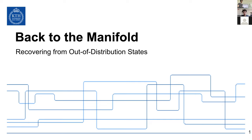My name is Alfredo Reichlin, I'm a second year PhD student at the Royal Institute of Technology, KTH, in Sweden. I'm supervised by Professor Danika Kragic and I mainly work on data-driven robotics — offline reinforcement learning, imitation learning, and meta learning as ways to speed up the learning process. Today I'm going to talk about a paper we submitted, and specifically about a model that helps the agent learn through a dataset to avoid out-of-distribution states.